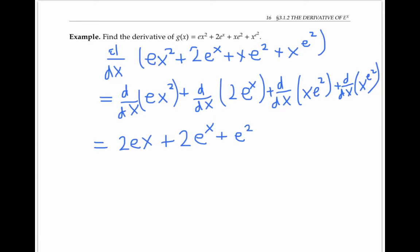Finally, to take the derivative of x to the power of e squared, I can use the power rule, because my variable is in the base, and I have a constant e squared in my exponent. So using the power rule, I bring down the e squared times that by x, and subtract one from the exponent.